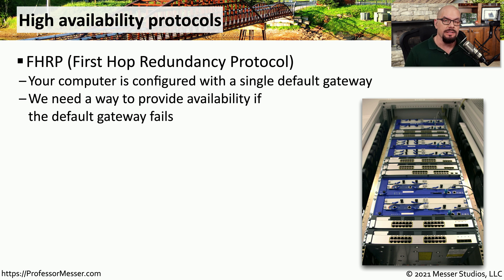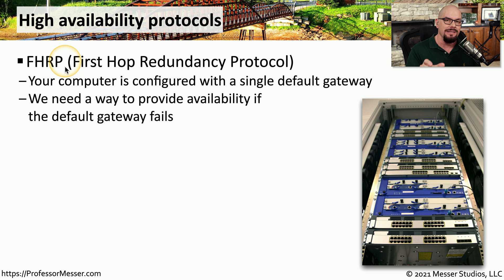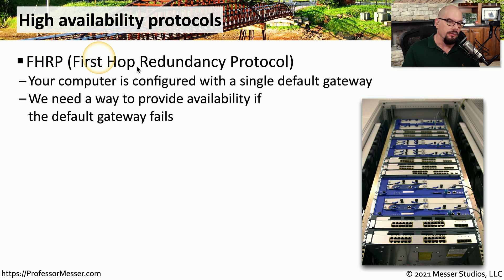We might also be able to implement redundancy using specialized protocols. Take, for example, the First Hop Redundancy Protocol, or FHRP. If you look at the default gateway configuration on your local machine, you'll notice there is a single IP address designated as the default gateway. If you lose connectivity to that IP address, you've lost connectivity outside of your local subnet. But if you're using FHRP, you can configure multiple routers on your local subnet to all work together, so that if your default gateway fails, FHRP allows another router to take over that IP configuration and act as the default gateway.